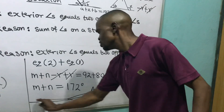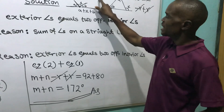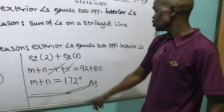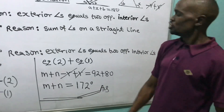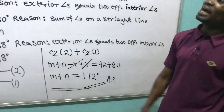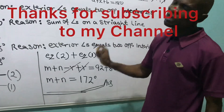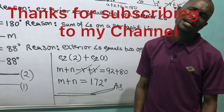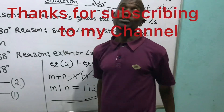That means when they ask me to find the sum of M plus N, the sum of M plus N equals 172 degrees. That's what they asked in this particular question. Thank you for loving this channel and for subscribing. See you in the next video.